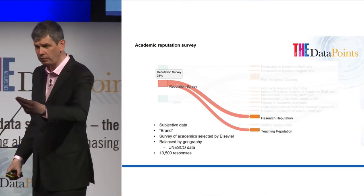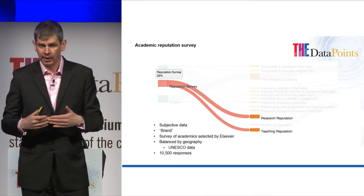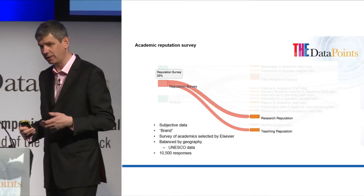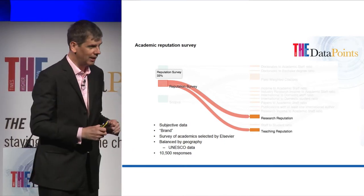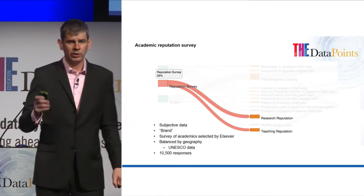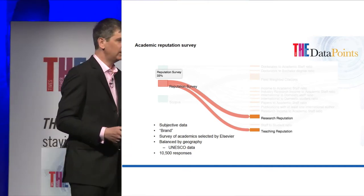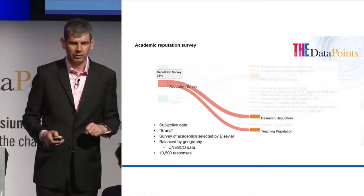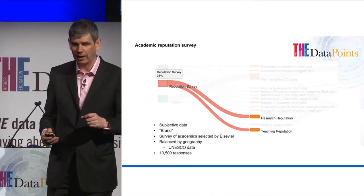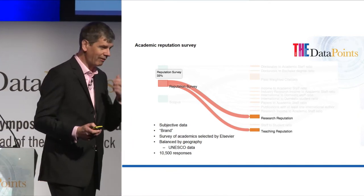We want to make sure the survey accurately reflects the spread of researchers around the world. We use data from UNESCO and the OECD, which tell us rough numbers of researchers by country. We balance both on the output — making sure we send enough surveys to each country — but also after the fact on the input. So if we find that people in the US are overly keen on telling us their opinions whereas people in China are less keen, we will upweight the Chinese votes and slightly downweight the US votes.